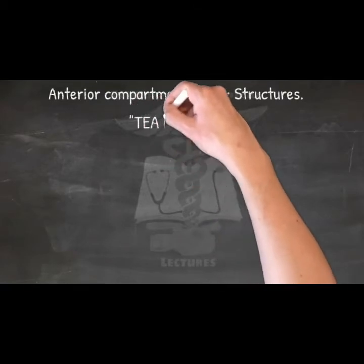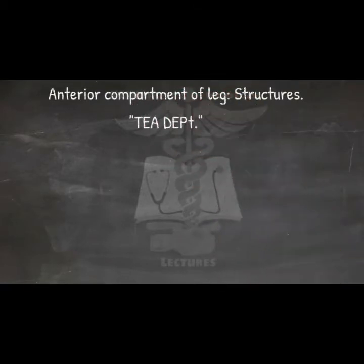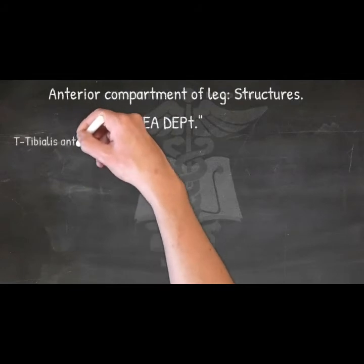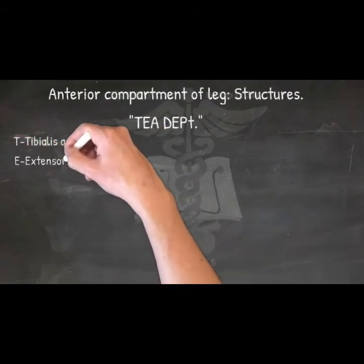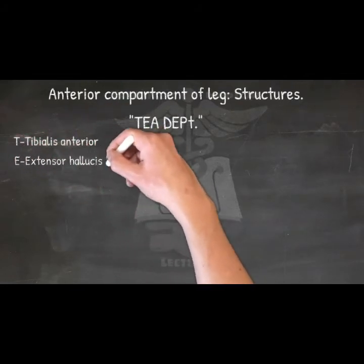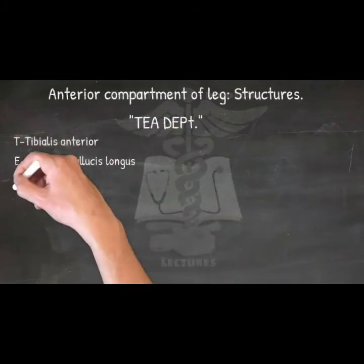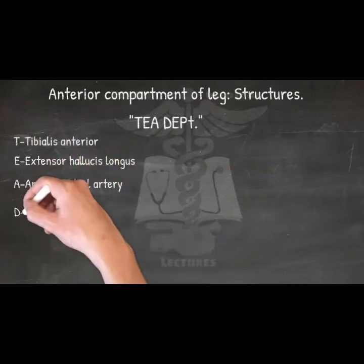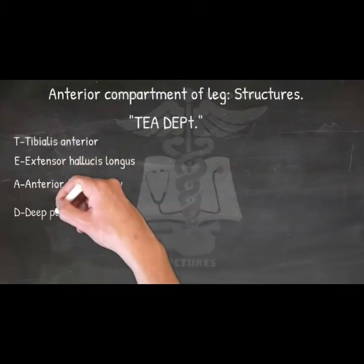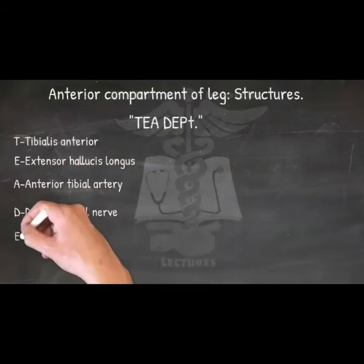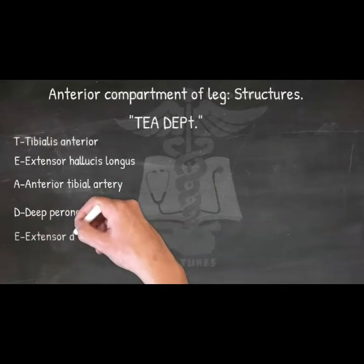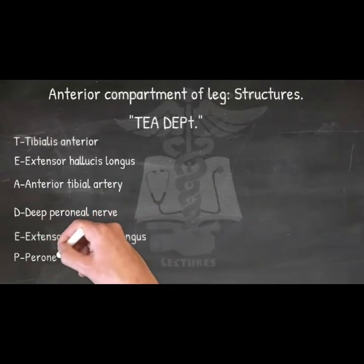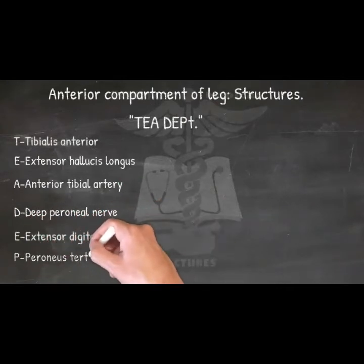Structures of the anterior compartment of the leg — mnemonic: 'T Department.' Tibialis anterior, Extensor hallucis longus, Anterior tibial artery, Deep peroneal nerve, Extensor digitorum longus, and Peroneus tertius.